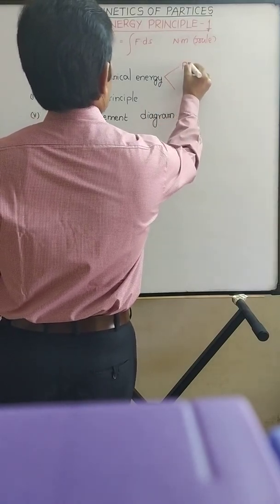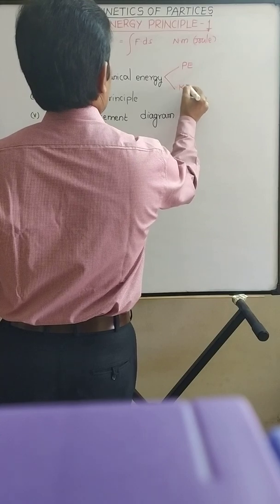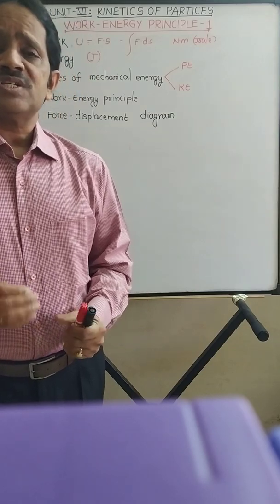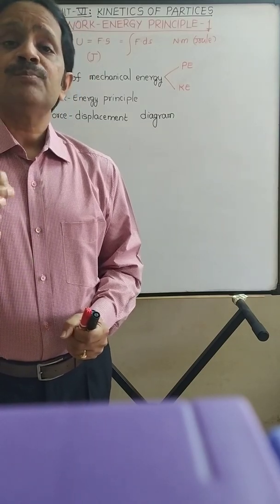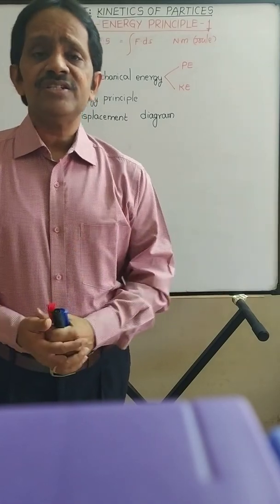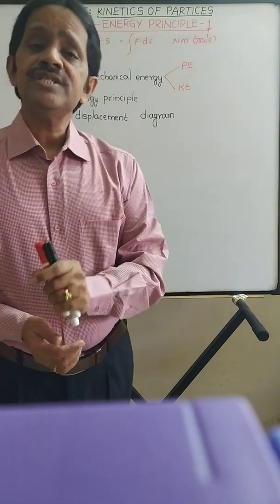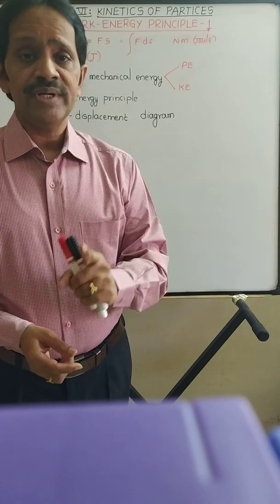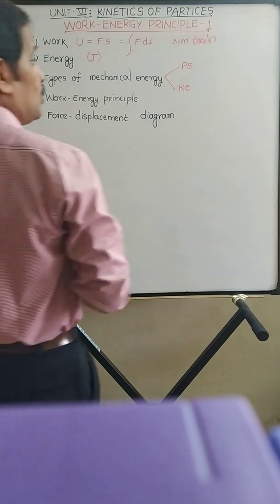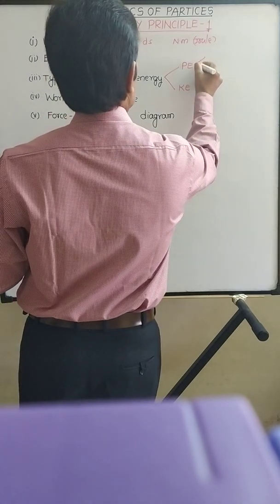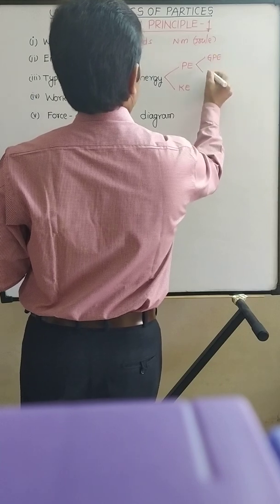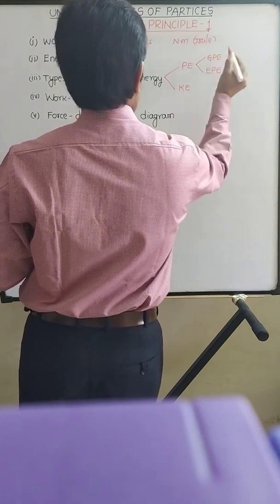Potential energy is the energy possessed by the body due to its position or elevation, whereas kinetic energy is the energy possessed by the body due to its motion or velocity. There are two types of potential energy: gravitational potential energy and elastic potential energy.